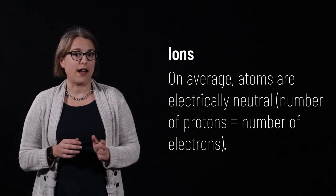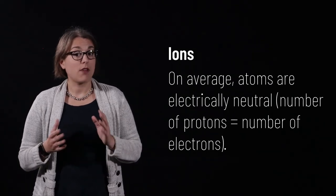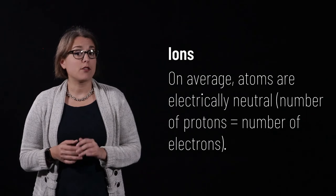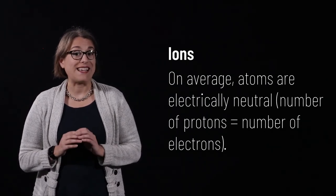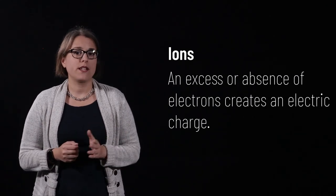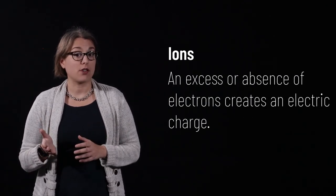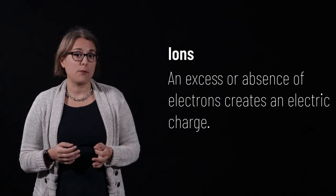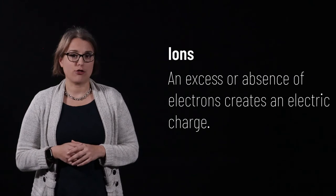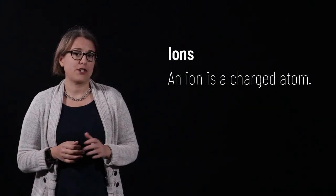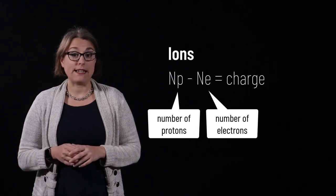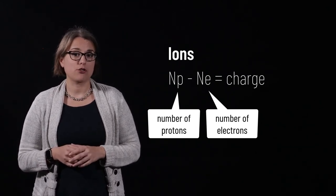Finally, let's talk about ions. Atoms, on average, are electrically neutral. This means that the number of protons in the nucleus is completely balanced by an equal number of electrons orbiting that nucleus. When the number of protons and the number of electrons is no longer equal due to an excess or absence of electrons, then the atom is charged. We call a charged atom an ion. The number of protons minus the number of electrons tells us the charge.